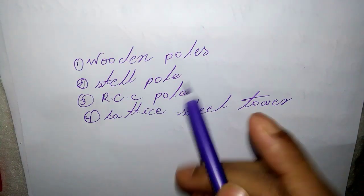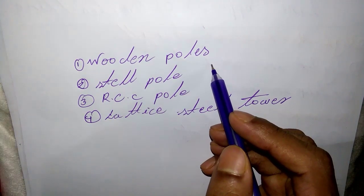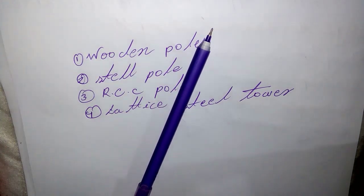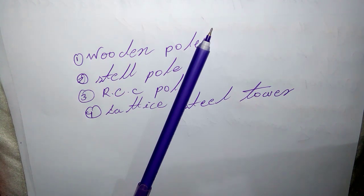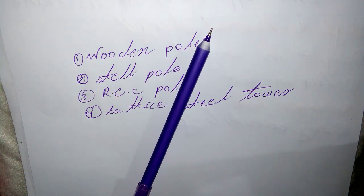Wooden poles are made of seasoned wood like shawl and share, and are suitable for lines of moderate cross-sectional area with relatively shorter spans, up to 50 meters. Such supports are cheap, easily available, and provide insulating properties, and are therefore widely used for distribution purposes.